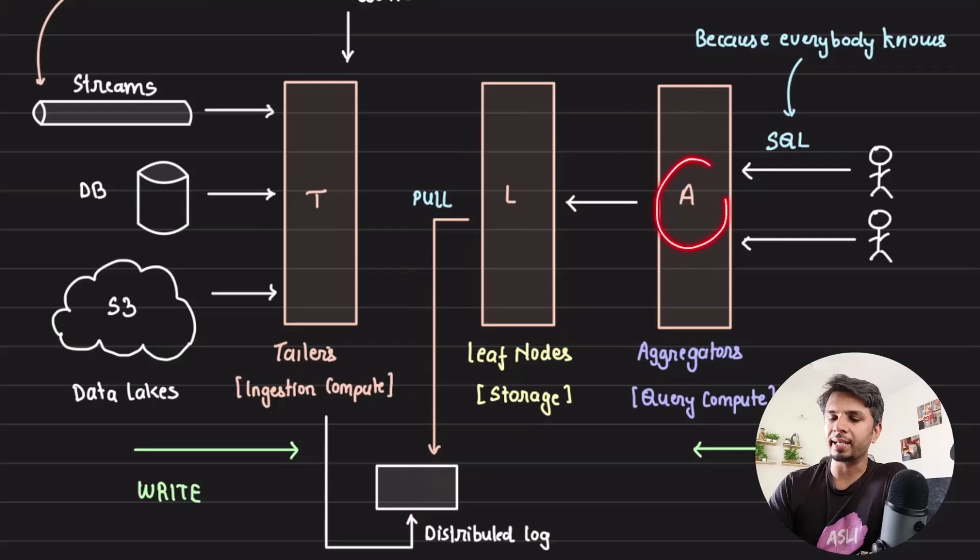Then comes your aggregator nodes. The aggregator nodes' job is to accept the SQL query. They execute the SQL query by pulling the required data from the leaf nodes. Aggregator nodes are called aggregators because they're pulling the data, aggregating it, and responding back to the user.